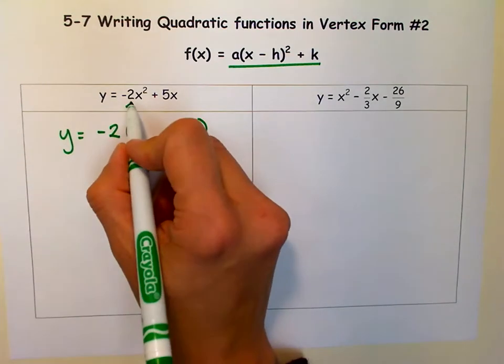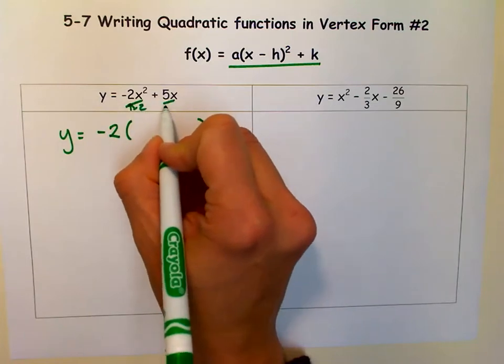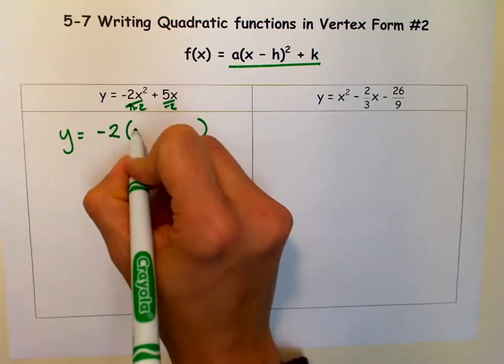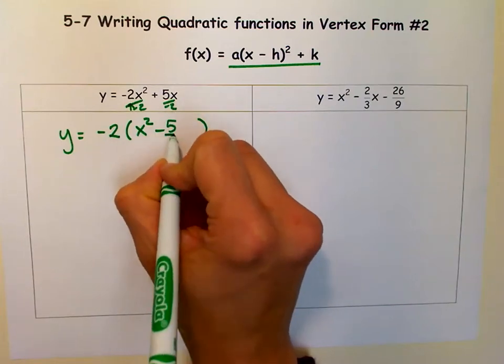So we're factoring out a negative 2, which means when we factor out, we've really just divided by negative 2. So dividing this by negative 2 gets me an x squared. Dividing this by negative 2 gives me a 5 halves.